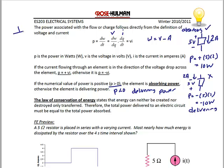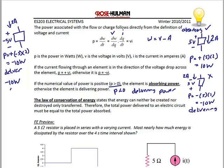Let's look at a couple more examples. If I draw an element to obey the passive sign convention with a current of 2 amps and a voltage of negative 5 volts, because it obeys the passive sign convention I use a positive sign, giving positive negative 5 times 2, which is negative 10 watts. So this element is delivering power. There are two ways to state that: either negative 10 watts, which means 10 watts delivered, or 10 watts delivering. You never want to put negative 10 watts delivering, because that means absorbed.